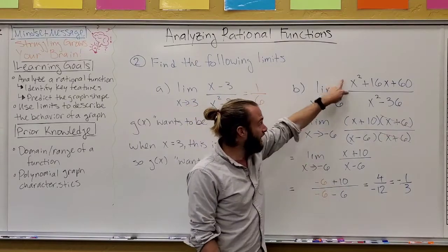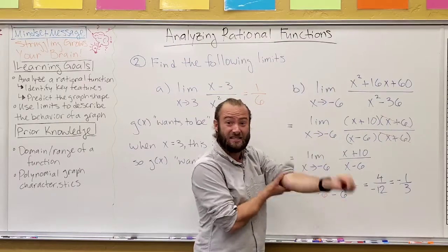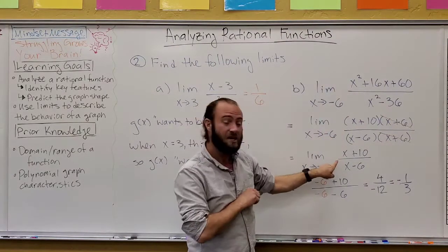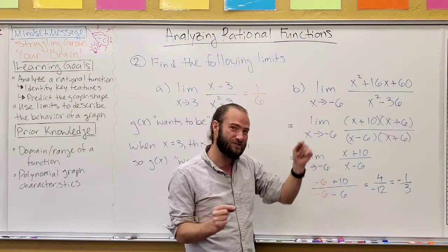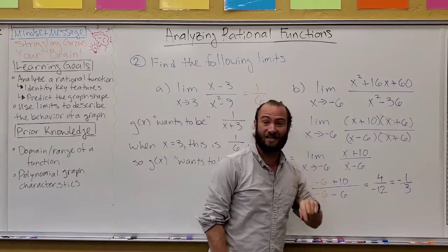once we factor, cancel, then this becomes an equivalent expression, but don't forget, technically speaking, this one still has that discontinuity at negative six. But since this one doesn't, we can see what it's trying to be, and if you plug that in and simplify, we get negative one-third.